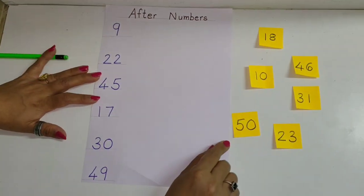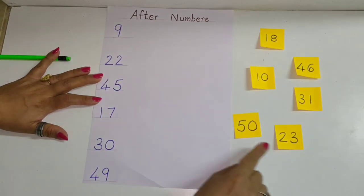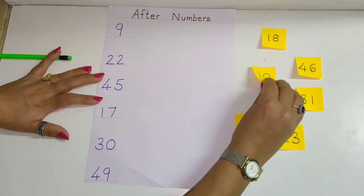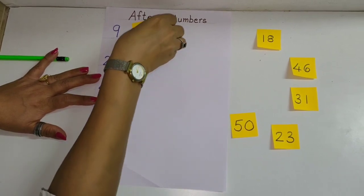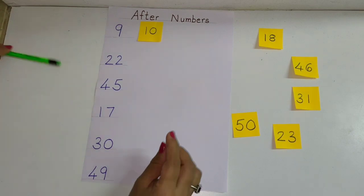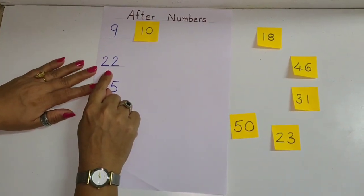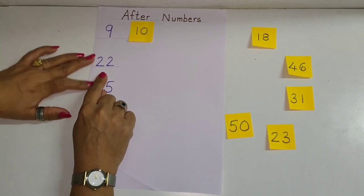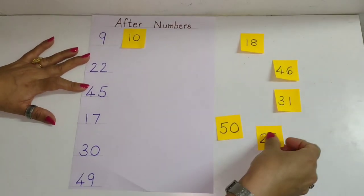So the first number is number nine. So for all these chits here we have to find the after number. So the after number after nine is number ten. Very good. So we take ten and we place it here. Next number is number 22. So what comes after 22 children? Yes, 23. So I'll pick this up and I'll put it here. Number 23.